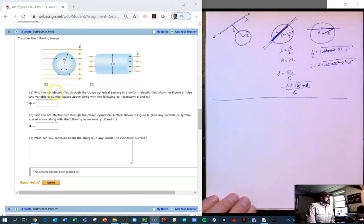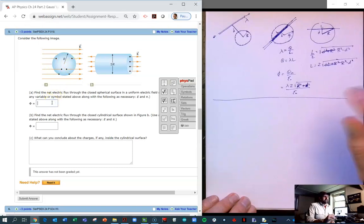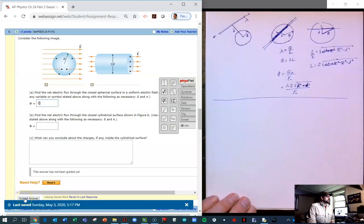And so the question states, what is the flux through this blue sphere due to those electric field lines, and because every field line enters and every field line exits, then that flux is going to be zero, and there's no charge on the inside. So we submit our answer to check it.